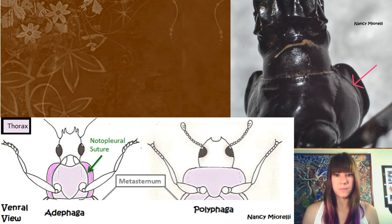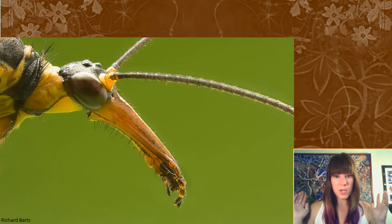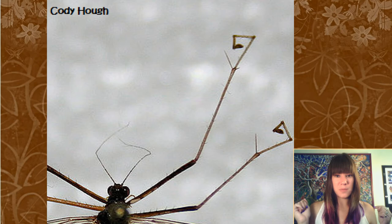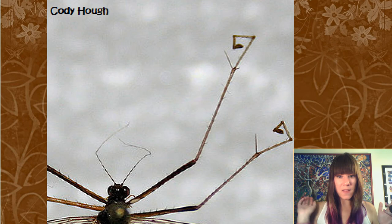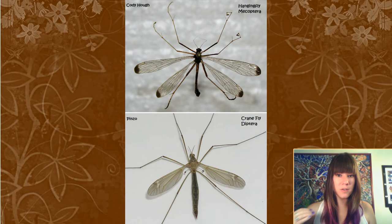The next order is Mecoptera. In Greek, Mecoptera means 'long wings,' and their characteristics are that they have slender bodies and an elongated head capsule that looks like a big giant head. Hanging flies are really cool — they have a spike off their tibia and will hang near lights at gas stations, wait for something to fly by, grab it, skewer it on the spike, and eat it. These guys look a lot like crane flies, but they have four wings while crane flies only have two, so count the wings.